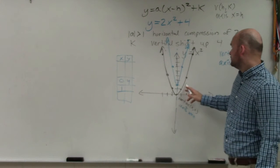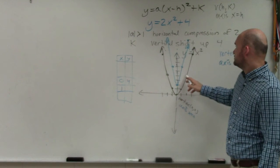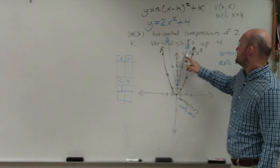So I go over 2, up 8 - 1, 2, 3, 4, 5, 6, 7, 8.